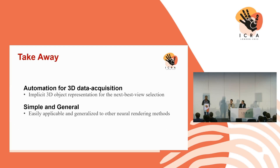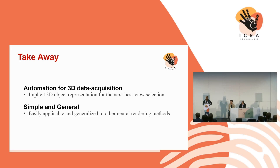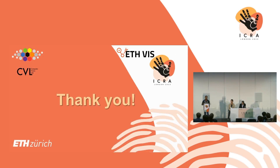The takeaway is that we are trying to automate 3D acquisition with an active robot, and we showed that it's quite possible to do with implicit representation. The method is very general, and with recent advancements in neural radiance fields, you can use faster versions of NeRF and achieve very good reconstruction in less than two minutes. With that, I conclude. Thank you for your time.